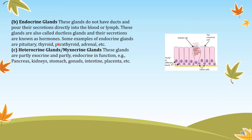Endocrine glands release secretions into the connective tissue — the blood or lymph — from where they are transported to different organs of the body. The endocrine glands include the pituitary, thyroid, parathyroid, and adrenal glands. Heterocrine glands, or myxocrine glands, are partly exocrine and partly endocrine in function. Examples include the pancreas, kidneys, stomach, gonads, intestine, and placenta. This is an example of the goblet cells present in the walls of the intestine, which help in secretion of enzymes.